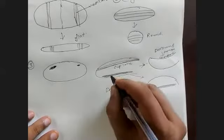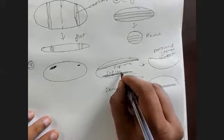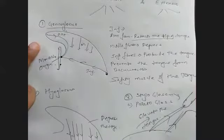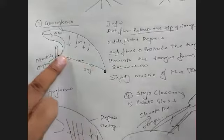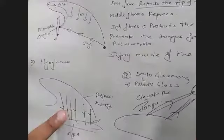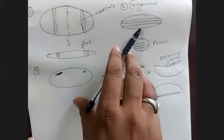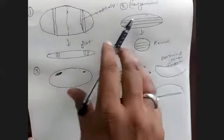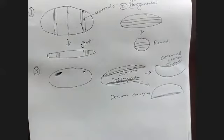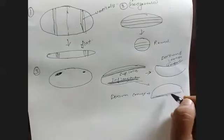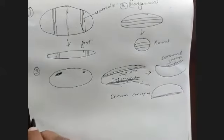Summary of muscle actions: genioglossus protrudes the tongue; hyoglossus depresses the tongue; styloglossus elevates the tongue; verticalis makes the tongue flat; transversalis makes the tongue round; superior longitudinal makes the dorsum concave; inferior longitudinal makes the dorsum convex. That is about the actions of the tongue muscles.